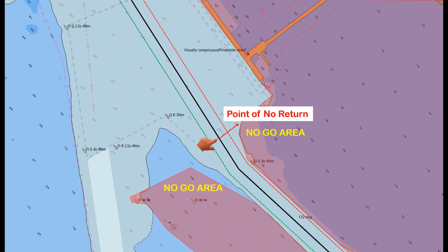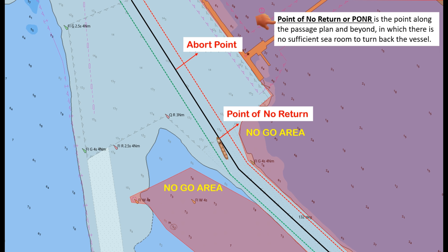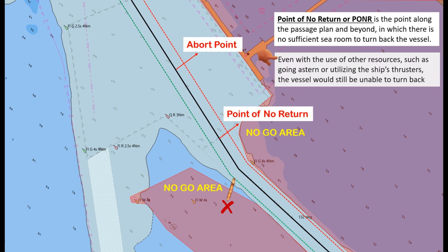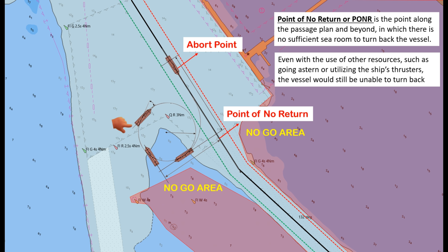Once the no-go areas are marked, the next step is determining the point of no return. PONR should be established first, as it serves as the basis for identifying the abort point. The point of no return is the point along the passage plan where there is no sufficient sea room to turn the vessel back, even with the use of other resources such as going astern or utilizing the ship's thrusters. Every vessel may differ in determining its PONR and abort point due to its maneuvering characteristics and external forces such as wind and tidal currents.